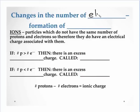All right. Now, what about the changes in the number of electrons? Now, electrons are negative particles, remember? And when we change our number of electrons, we form what are called ions.